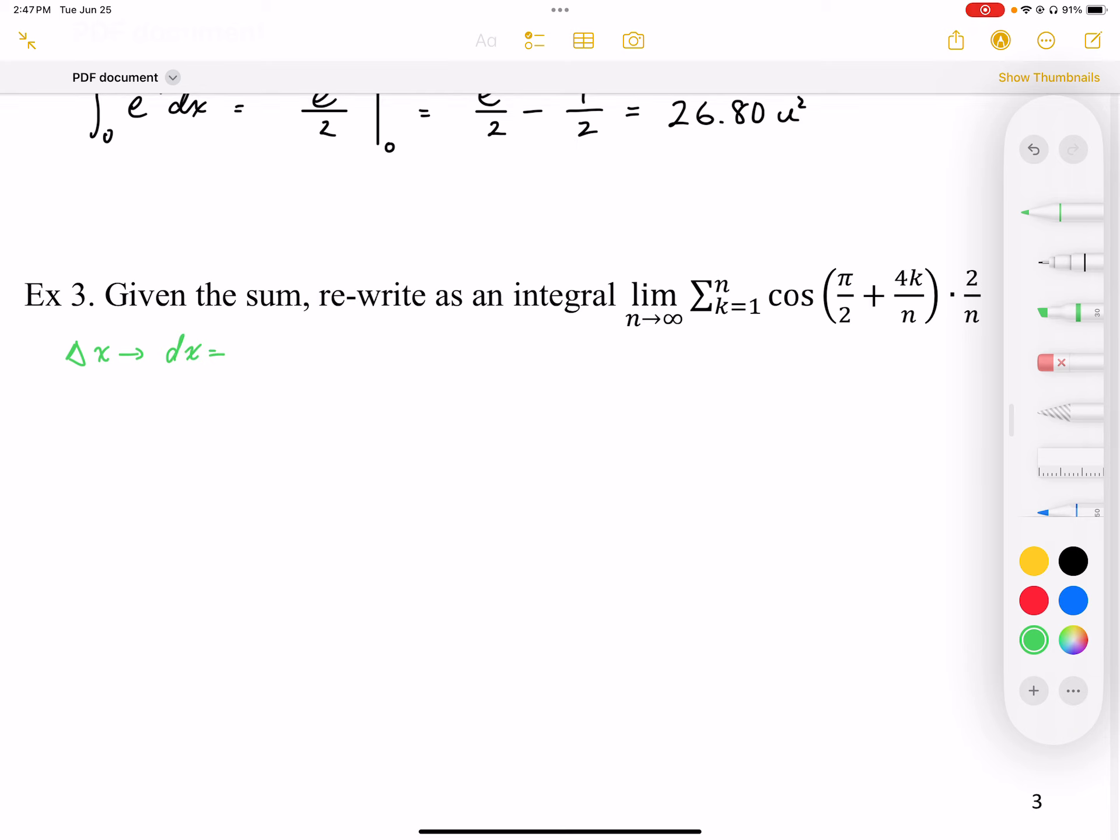And the dx term is going to be the term on the outside of the function, which in this case looks like it's a cosine function. So I'm going to take that cosine expression, and on the outside it looks like I have a dx on the outside here.